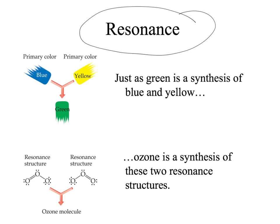We explain this with resonance. An analogy would be color: green is a synthesis of blue and yellow. It doesn't alternate — it's not sometimes blue and sometimes yellow, it's always green. It's an average or mixture of two colors. That's what resonance means. The real structure for ozone is somewhere in between the two structures. The extra double bond shares its time between one side and the other, making each bond not a single bond and not a double bond, but kind of a one-and-a-half bond.